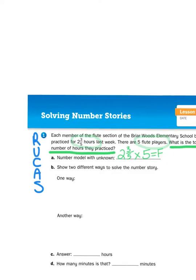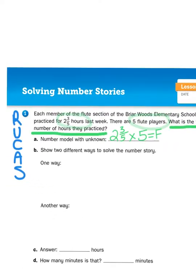The first thing they ask us to do after creating the number model is to show two different ways to solve the number story. Well, multiplication is repeated addition, so I could set this up as an addition problem — adding two and three-fifths to itself five times. Two and three-fifths is a mixed number, which is basically a number with two place values, where one of the place values is a part of a whole — that's the fractional part.